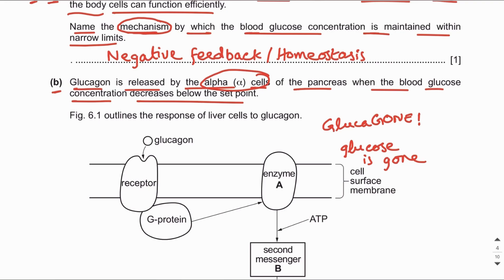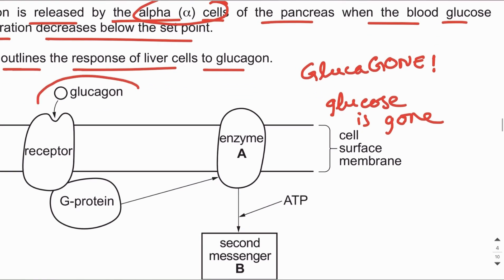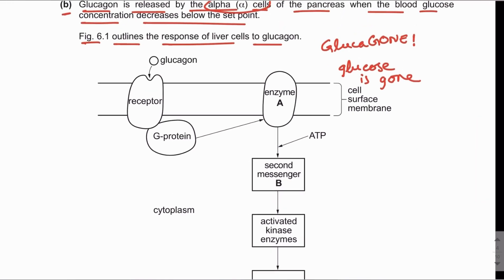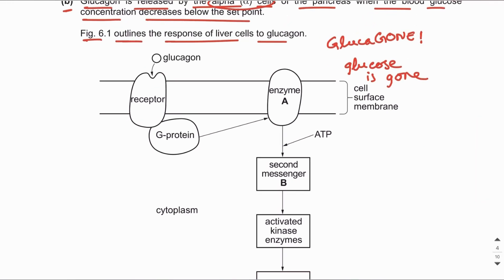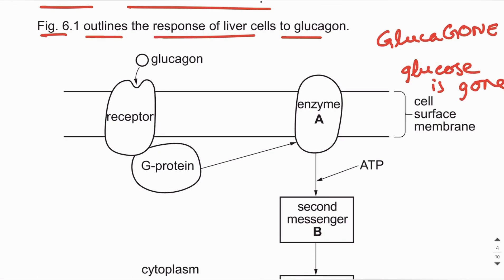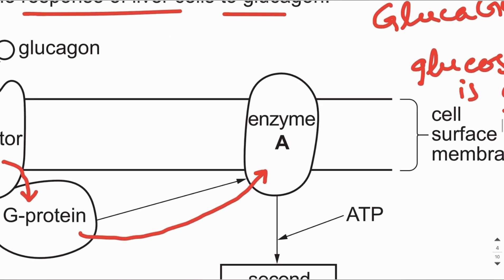Figure 6.1 outlines the response of the liver cells to glucagon. Glucagon is a hormone, and this figure illustrates the cell signaling pathway. Glucagon binds to its receptor, and the receptor changes shape. The receptor is coupled with an intracellular protein called G protein, and the binding causes activation of G protein.